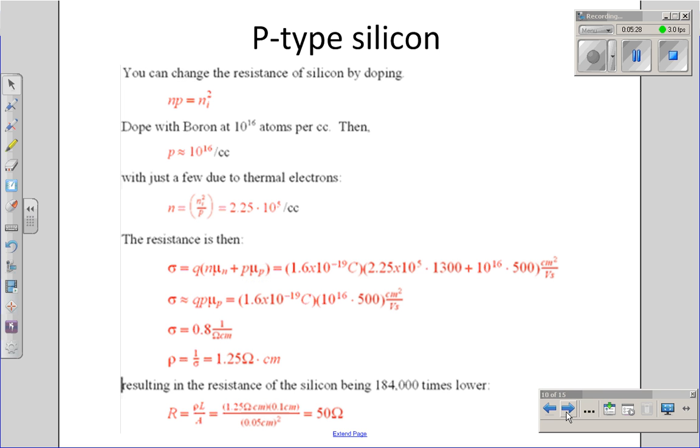However, by doping the silicon with boron at 10 to the 16th atoms per cubic centimeter, I've created a large number of holes. Boron only has three electrons in its outer shell. The crystal needs four. The three electrons in the boron atom fill the covalent bonds of the crystal with the silicon atom that it replaced.